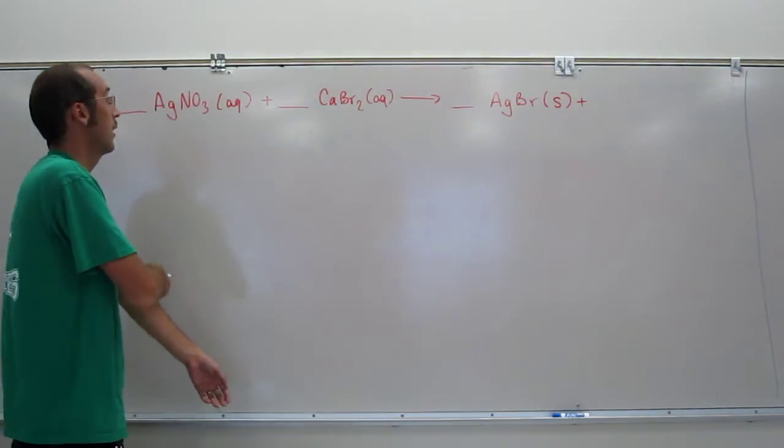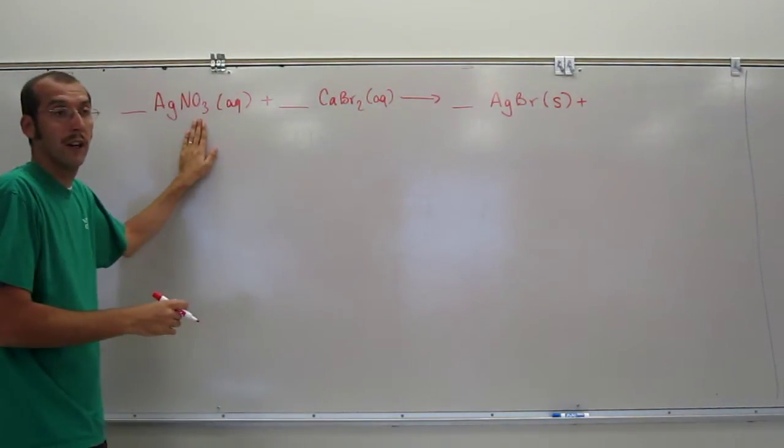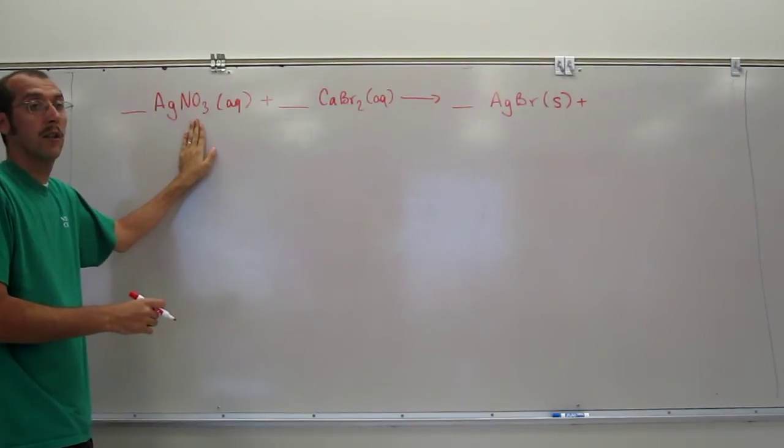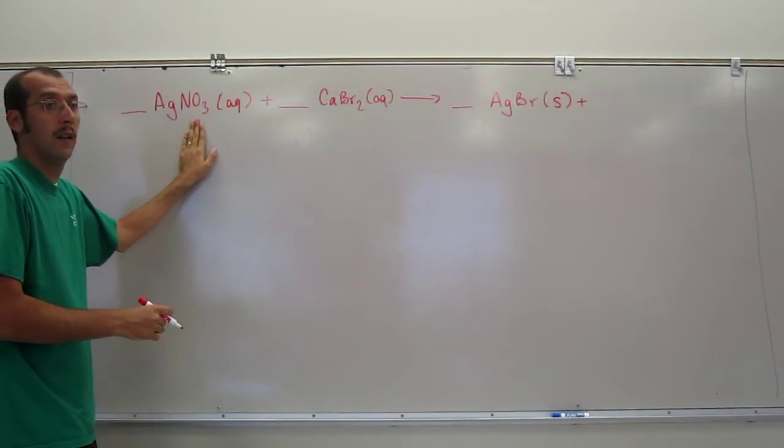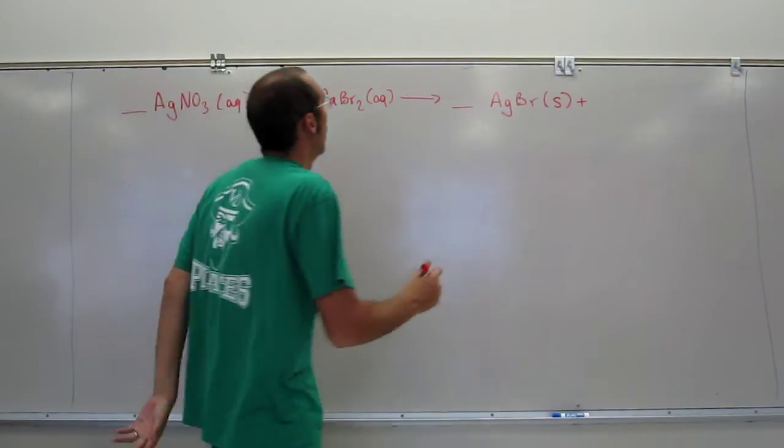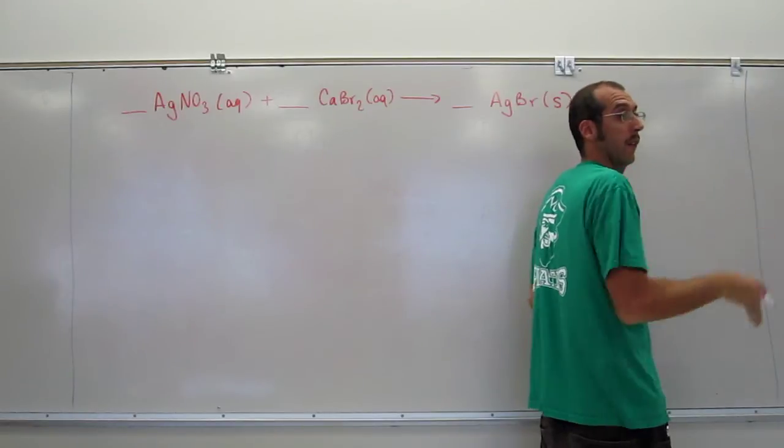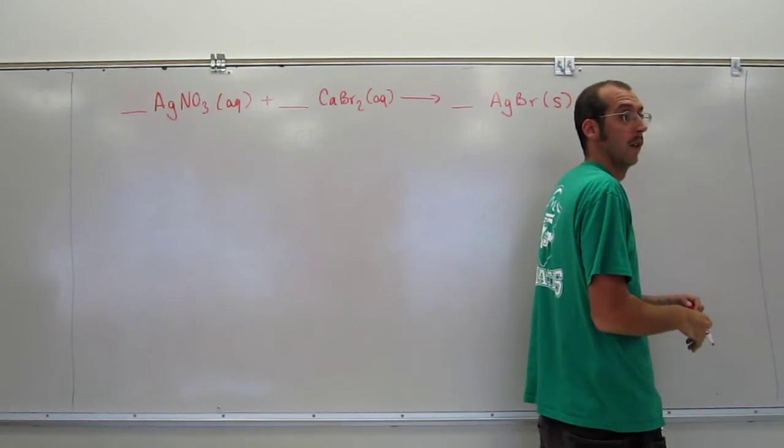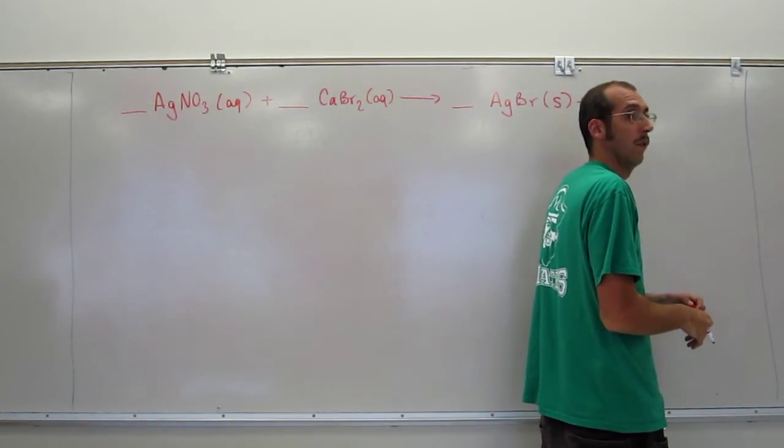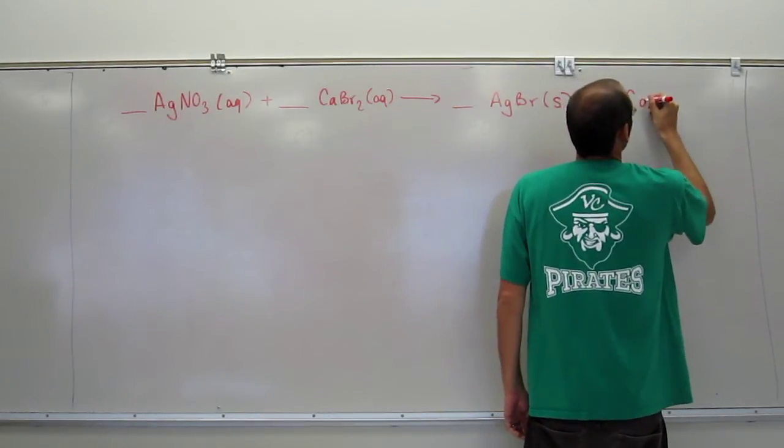And then, of course, the other is going to be calcium and nitrate. And remember, the nitrates, our ionic charge is what? Negative. Negative 1. Negative 1, right? Silver 1 nitrate, right? So how many nitrates does it take to counter that calcium?